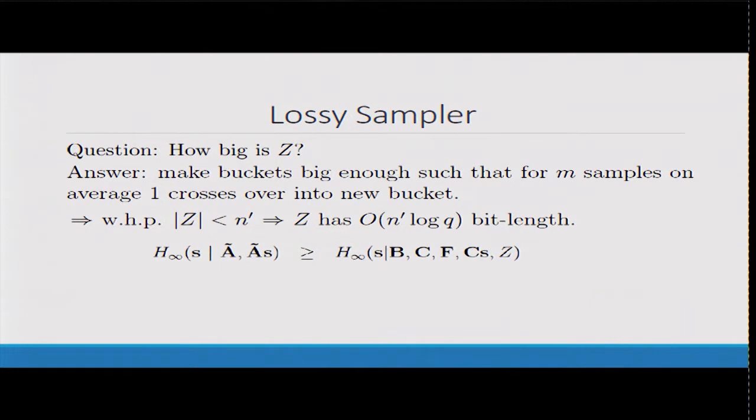Going back to what our goal was, our goal is to bound this entropy of s. I can bound this min entropy because we can reconstruct using those. We know that Cs, this vector, really only has N prime times log Q bits, so the entropy can only decrease by at most that much. And if I remove Z, the entropy can really only increase by that much. And BCF are independent of s. So you really only lose O of N prime times log Q if you condition on these values.